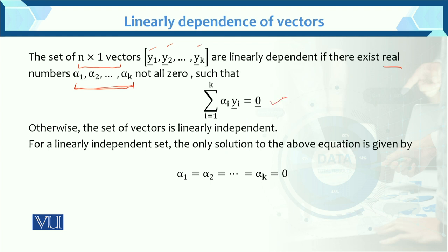Such that this equation is satisfied: the sum for i varies 1 to k. We have k vectors. The real constants alpha 1, alpha 2, which are not all zero — this is called the linearly dependent case.